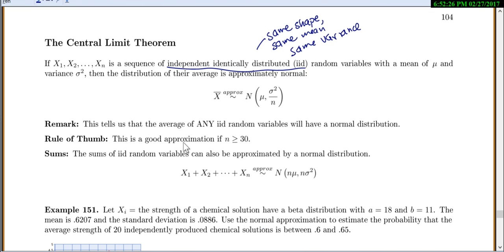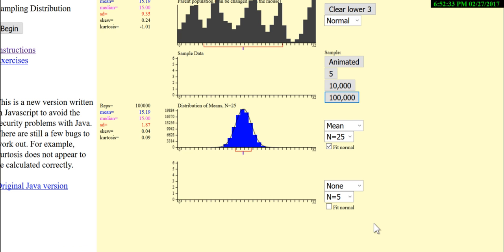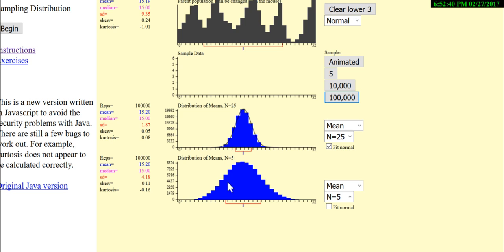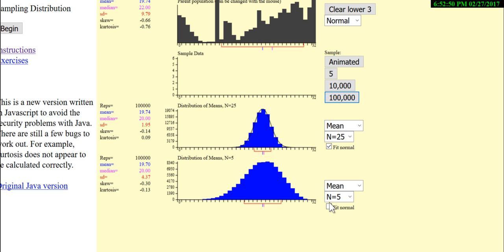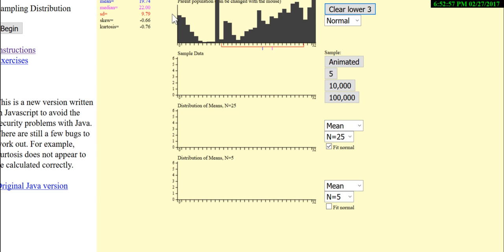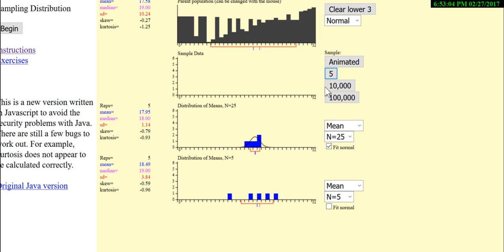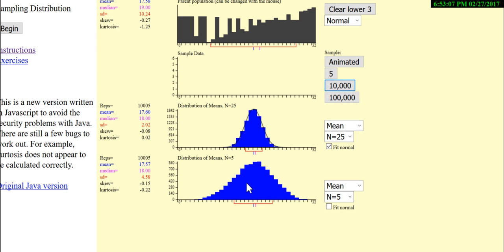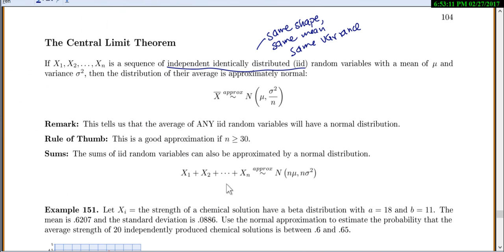It says approximately, this is only going to be a good approximation if n is at least 30. Our app will only let us go up to 25, but you can see that if I did change this, let's do a mean of n equals 5. At n equals 5, this one actually still looks pretty normal, but sometimes we'll get things that don't look very normal if you only have an n of 5. This one doesn't look too normal yet, but even at 5, it's still a lot more normal than the original population was.